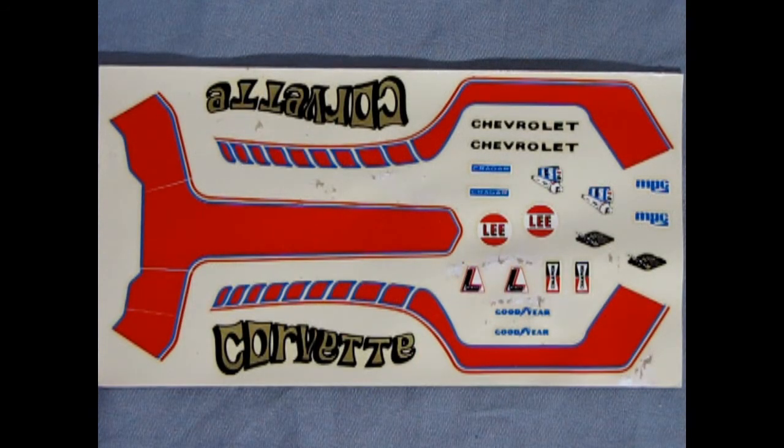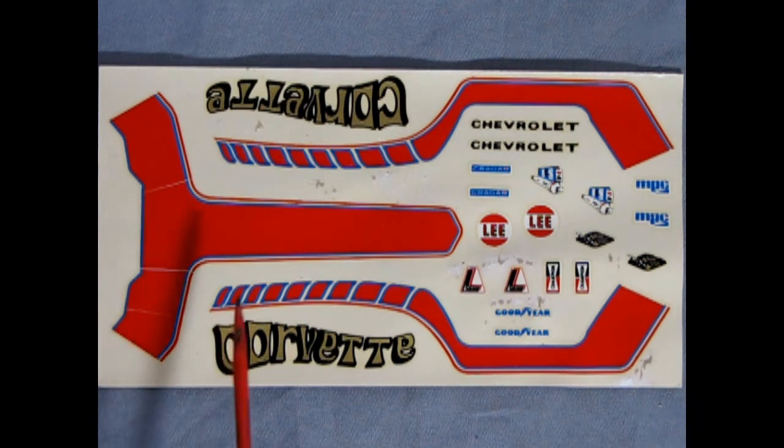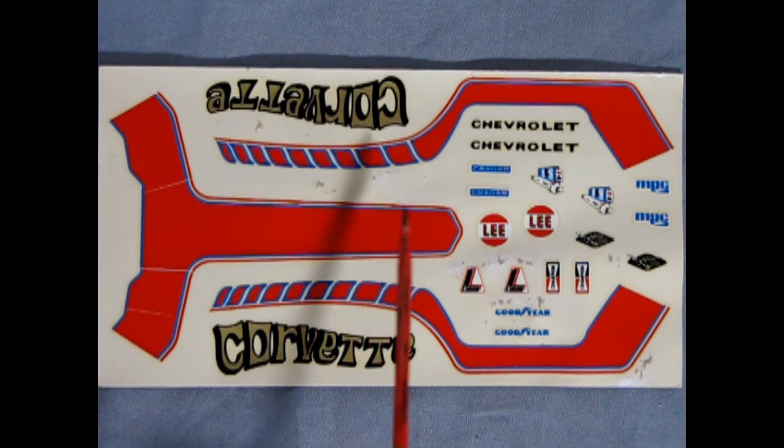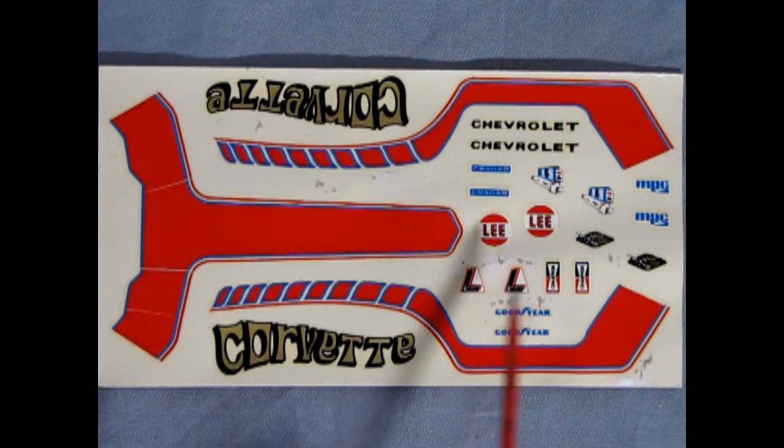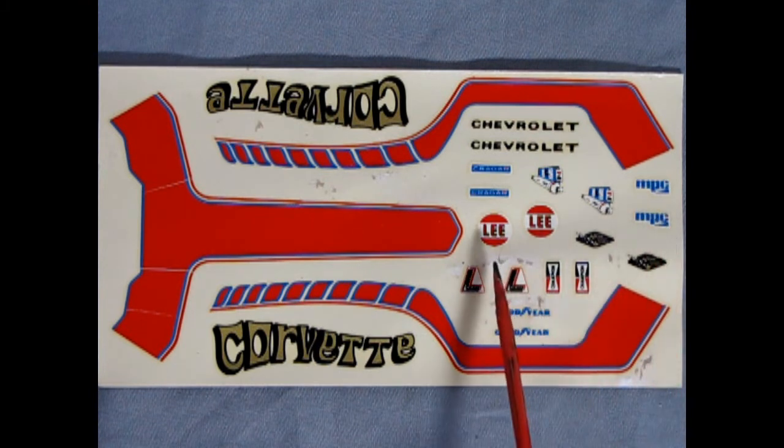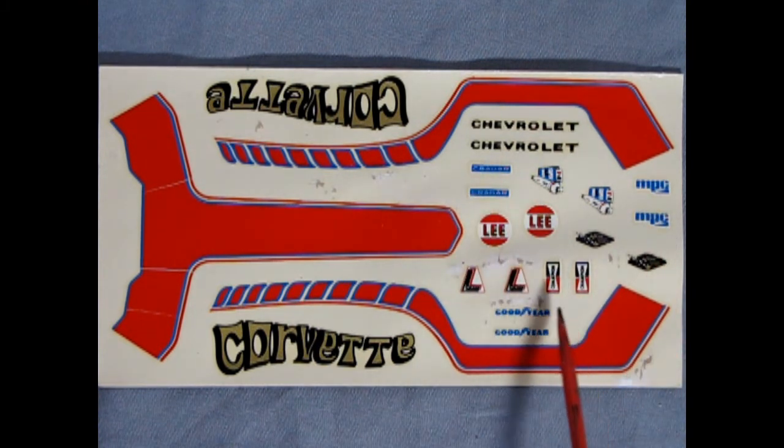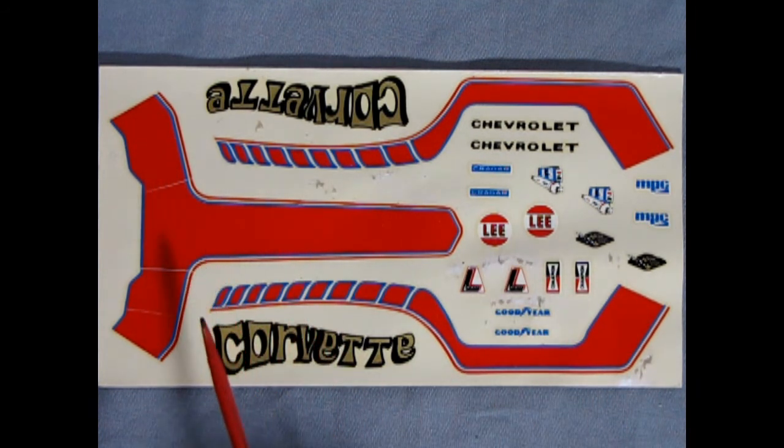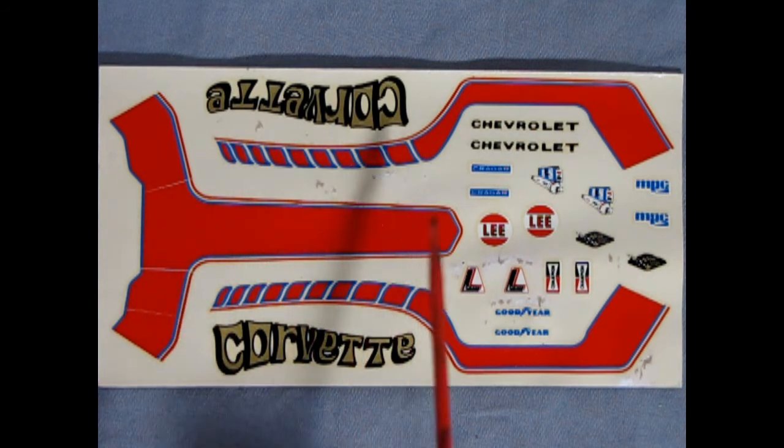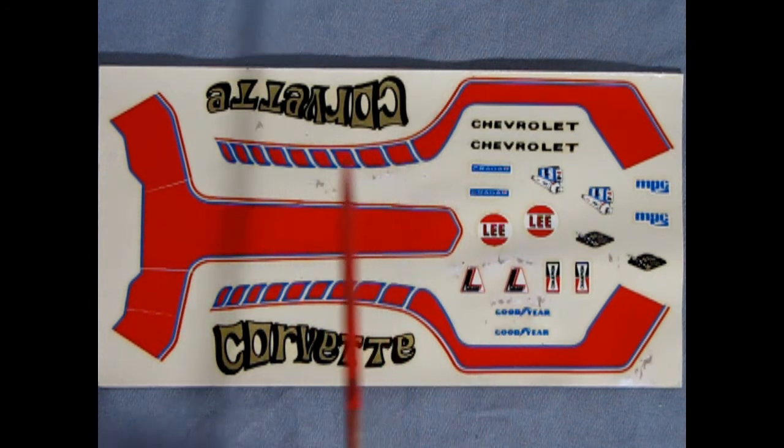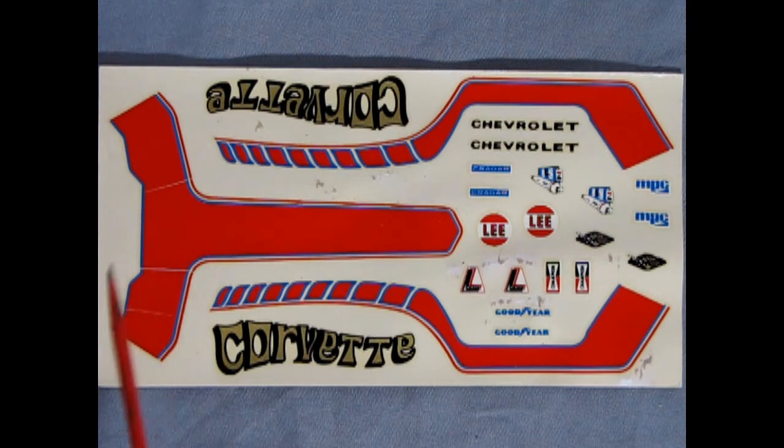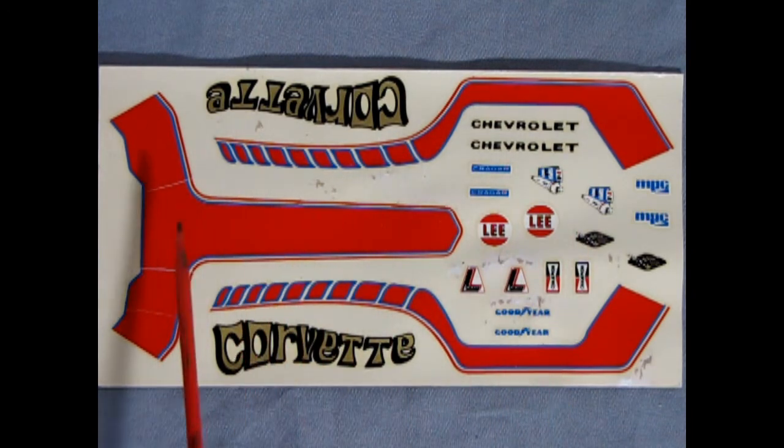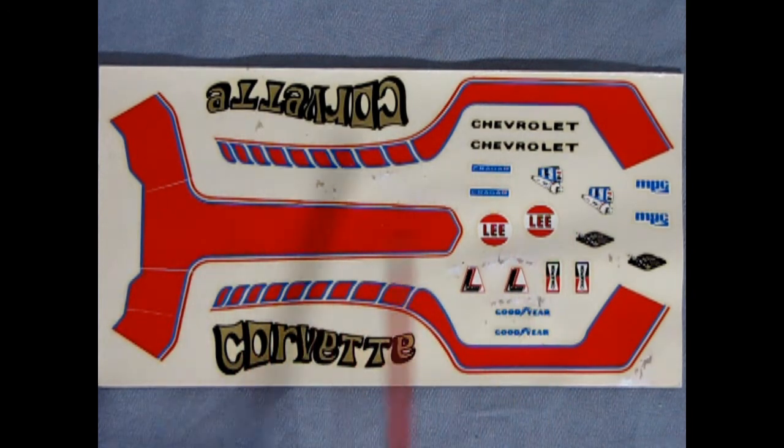Now how's this for a blast from the past? Here's our Corvette decal sheet and as you can see there's a lot of cool things on here. The MPC logo, Lee, Crager, Chevrolet, Goodyear Champion and many others. Now the problem is these decals have got really old and they've cracked. There is a technique where you can spray clear lacquer over top of this, a bunch of coats and that'll hold it all together as you soak these in the water.